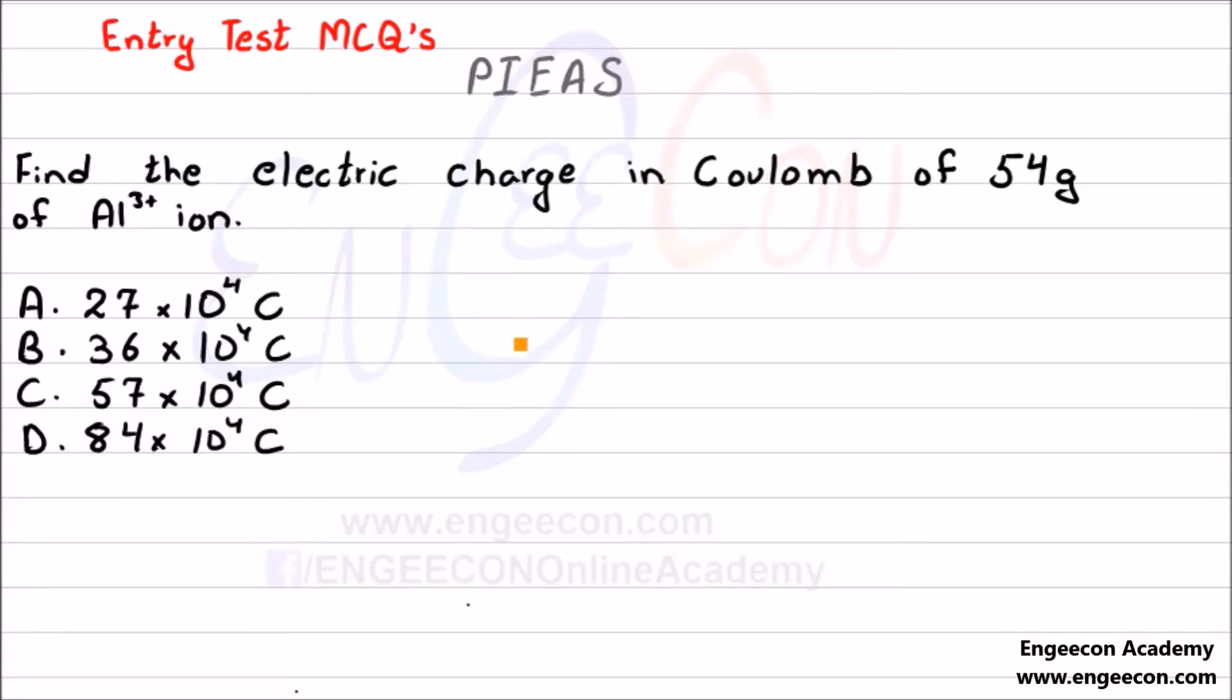This is a completely different type of MCQ and was in PIEAS entrance examination. Find the electric charge in coulomb of 54 grams of aluminium Al³⁺ ion. Try to stop this video and solve this MCQ yourself.